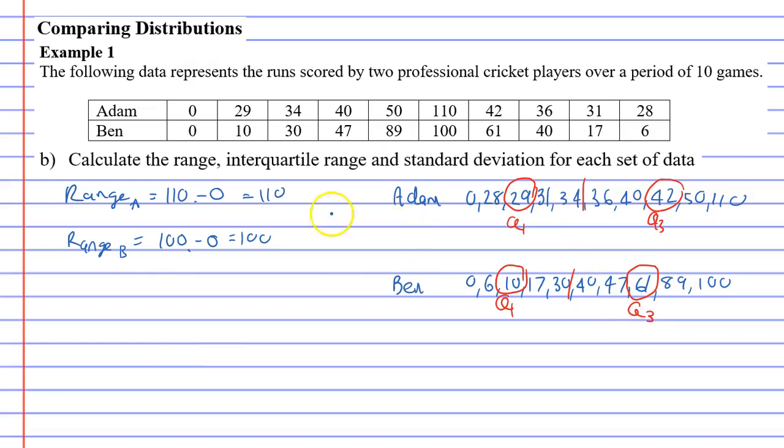Alright, so if we want to find the interquartile range, so interquartile range for Adam and interquartile range for Ben. We're going to go for Adam, 42 minus 29, which is going to be 13. And for Ben it's going to be 61 minus 10, which is 51. And what we notice here is that Ben has a much larger interquartile range than Adam. So we can see that Ben's data is much more spread out and Adam's data is much closer together.